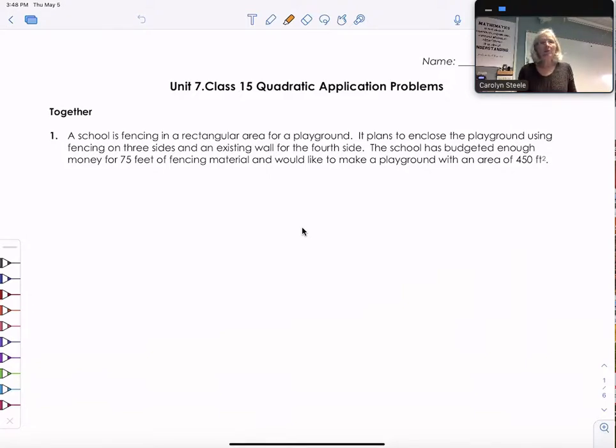Whenever you have an application problem it's always great just to read it really carefully and highlight key information along the way. All right so a school is fencing a rectangular area for a playground. It plans to enclose the playground using fencing on three sides, interesting, and an existing wall for the fourth side.